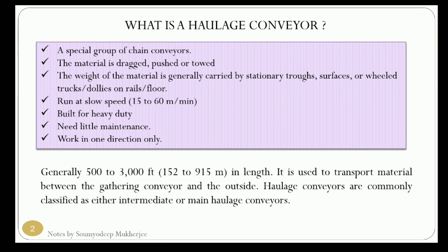The material is moved using flights or surfaces which are basically a part of the chain themselves. The weight of the material is generally carried by a stationary truck surface, wheel trucks, or dollies which run on rails or the floor. This type of conveyor is designed in a specific way, and in some cases the chain parts can be replaced by cables. This type of conveyor is basically a slow-speed conveyor.